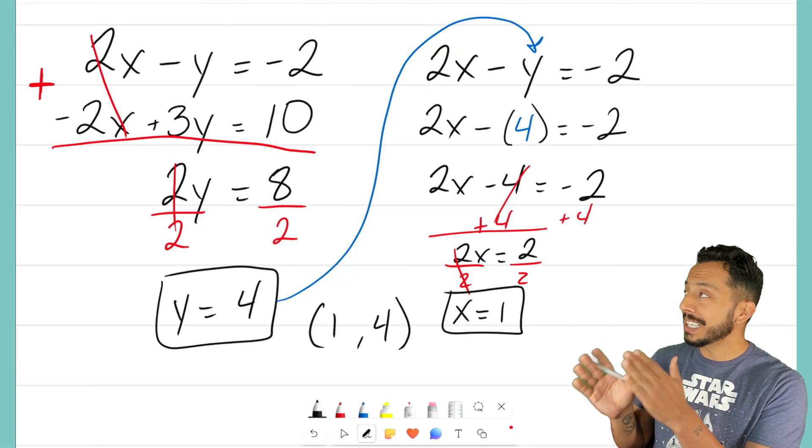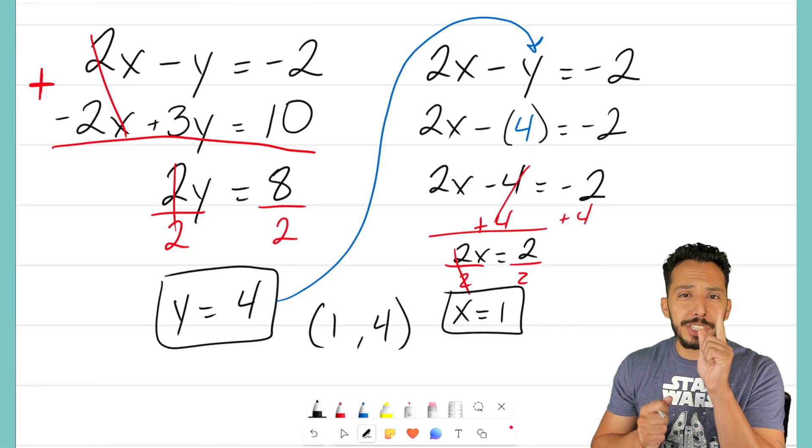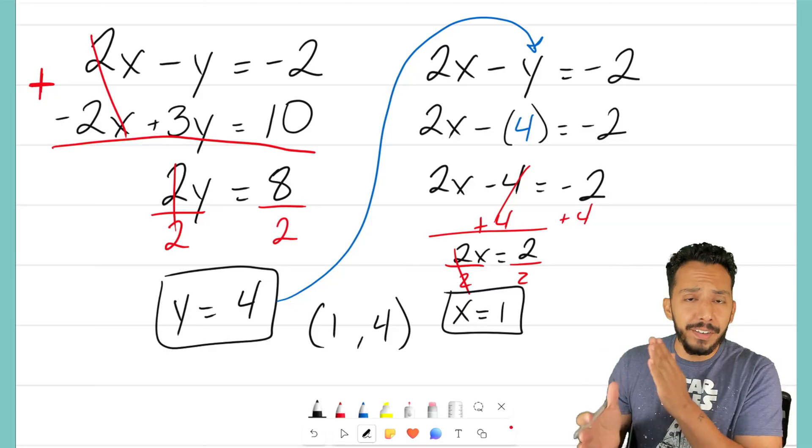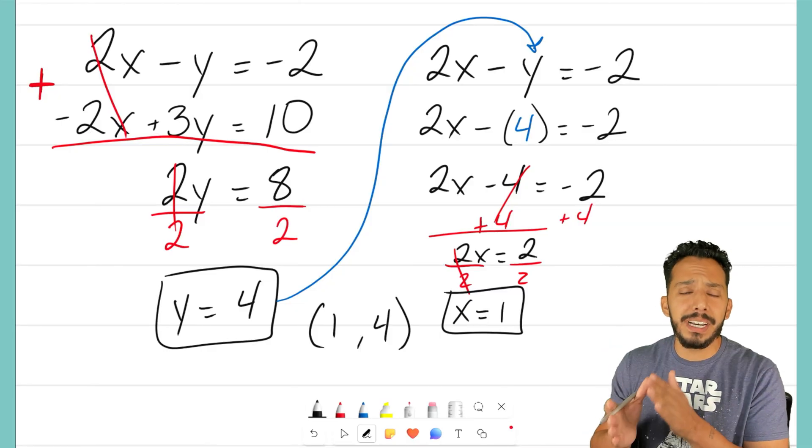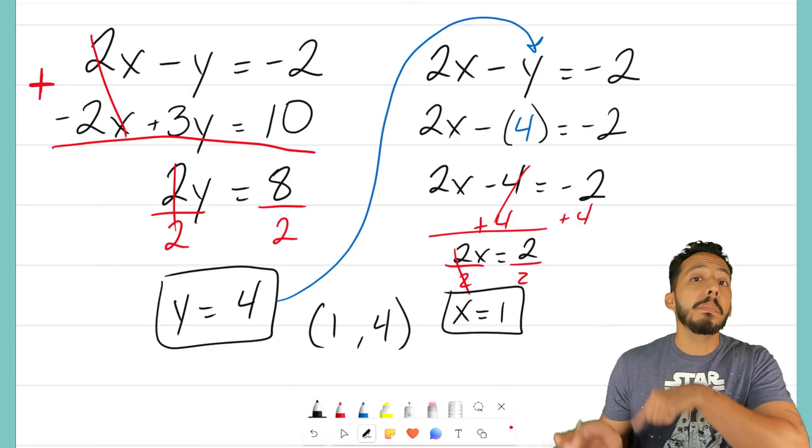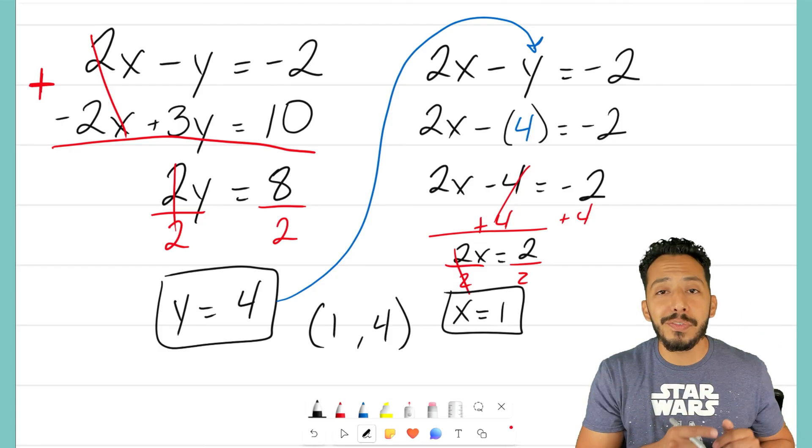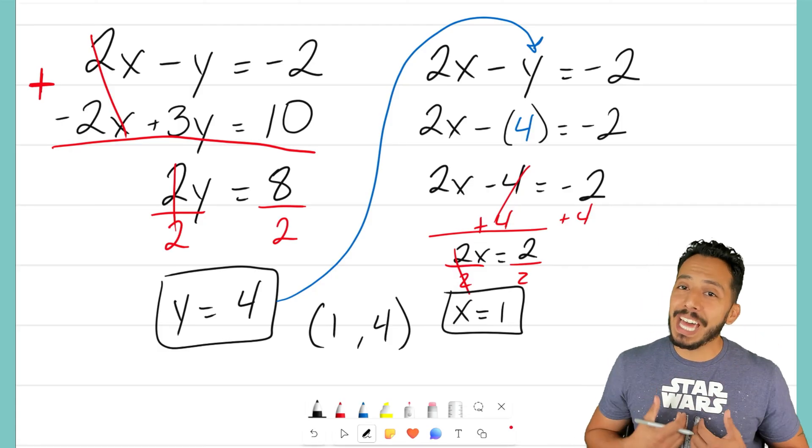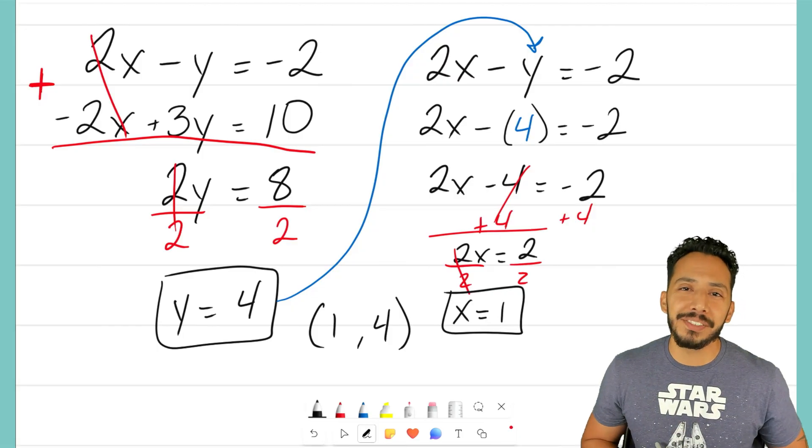That's how you use the elimination method, by combining the two equations into one, eliminating a variable, right? That's the whole goal. Eliminate a variable, solve for one, plug it into the other one, solve for the last one. Alrighty, y'all, you got this. It's That Math Magician, and I'll see you on the next video.